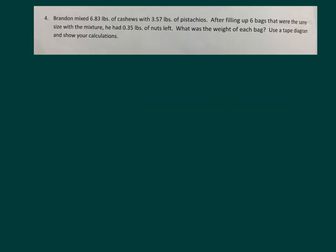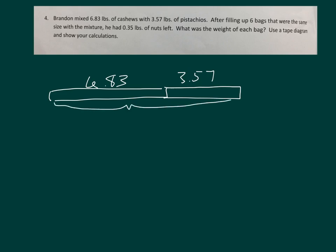Okay, reading the problem together, Brandon mixes 6.83 pounds of cashews with 3.57 pounds of pistachios. After filling up six bags that were the same size with the mixture, he had 0.35 pounds of nuts left. What was the weight of each bag? Use a tape diagram to show your calculations. So, he mixes cashews, 6.83 pounds, with pistachios, 3.57. After doing all of this, he has a certain amount left. Let's see how much this is to begin with. His mixture. 6.83 plus 3.57.